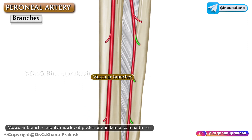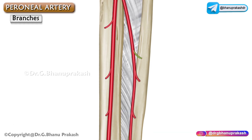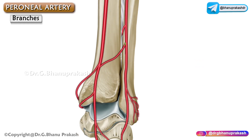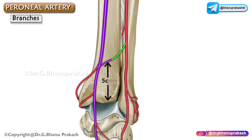Regarding the branches: first are the muscular branches, mainly given off to the posterior as well as lateral compartments of the leg, and a nutrient artery to the fibula. The communicating branch is the one which joins with a similar branch of the posterior tibial artery, approximately 5 centimeters above the ankle.